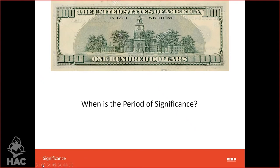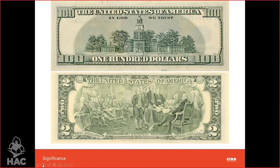Another foundational principle in historic preservation is the idea of a 'period of significance' — a very academic way of understanding a place and its history. I like the example of the $100 bill, which shows Independence Hall on the back — obviously the place where the Declaration of Independence and the Constitution were signed. There's a very clear period of significance: July 4th, 1776, when the founding fathers signed these important documents that set the future of our country.